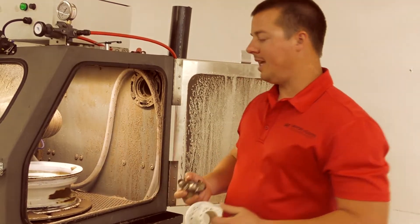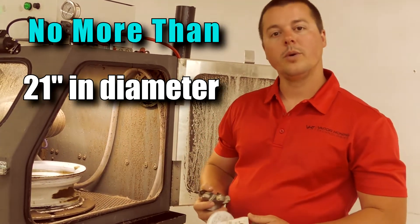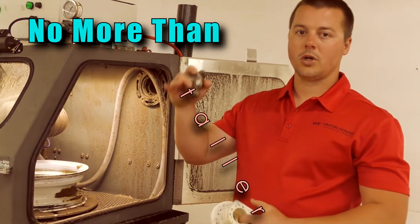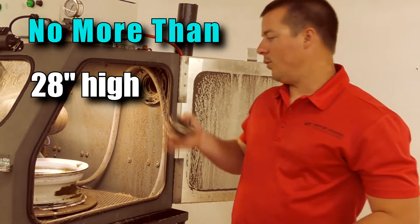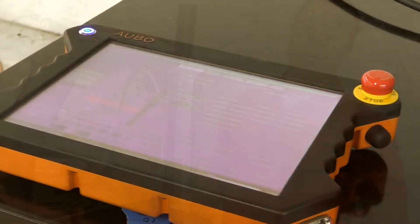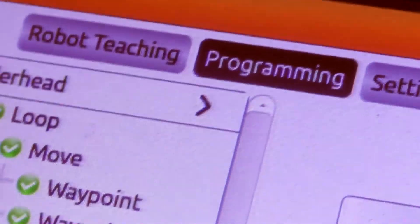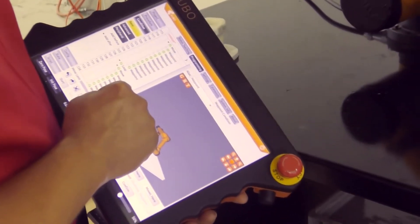If the part is no larger than 21 inches in diameter and no taller than 28 inches high, it will fit in this machine. You can program the part to automatically wet blast those parts over time.